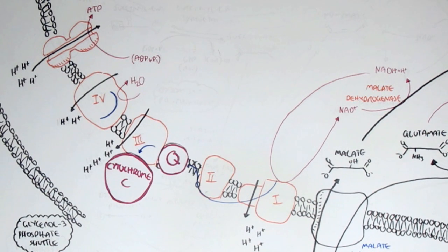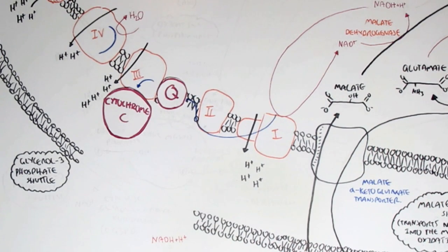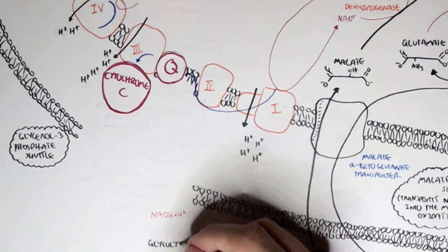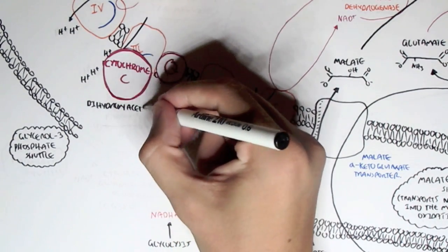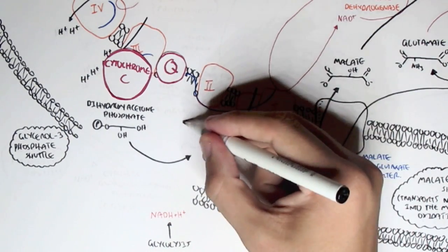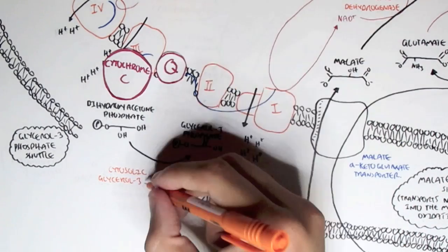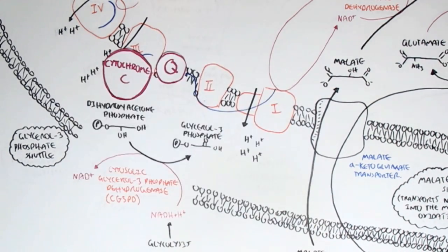The NADH used in complex 1 can come from the Krebs cycle, the preparatory step, or from glycolysis via the malate-aspartate shuttle. However, there is another shuttle: the glycerol 3-phosphate shuttle. This doesn't bring NADH into the matrix, only into the intermembrane space. A molecule called dihydroxyacetone phosphate can go through the outer membrane and float in the intermembrane space. It converts to glycerol 3-phosphate via the enzyme cytosolic glycerol 3-phosphate dehydrogenase, oxidizing NADH to NAD in the process.